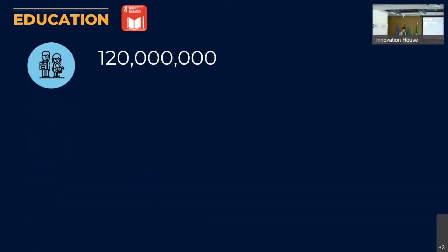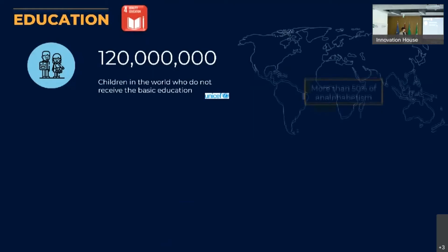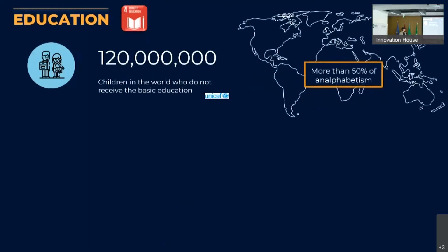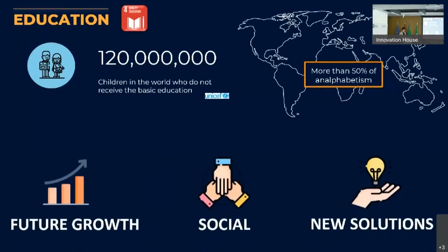Education is the fourth objective of the United Nations agenda. There are more than 120 million children in the world without basic education, and this could bring advantages in terms of future growth and social context, but I strongly believe that new people bring new solutions.